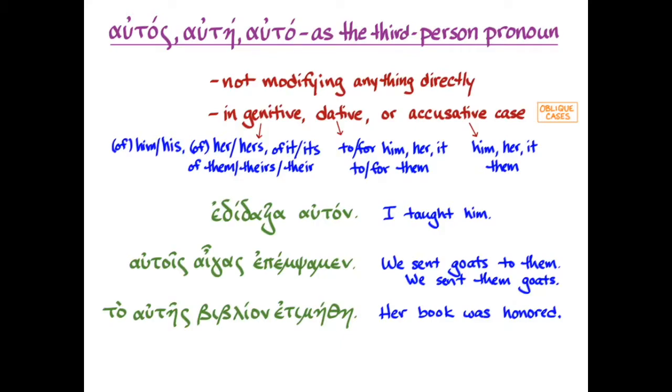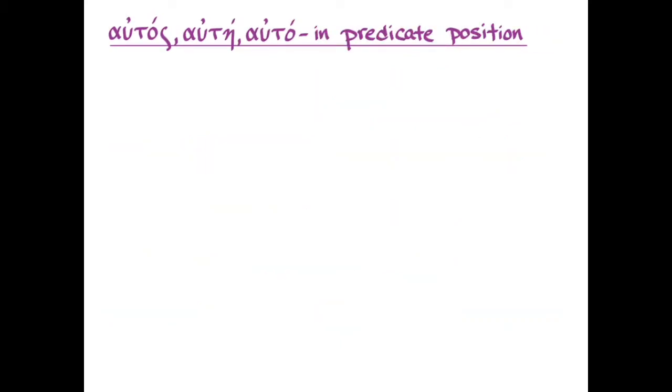Now, the last use of autas, autay, autah is something that it does when it's in predicate position, where it is an intensifier. That is, it adds the idea, I'm really talking about this thing, this particular thing. And so in English, we do that with the suffix self. So when we get it in the predicate position, in any case, it's going to have all sorts of familiar forms in English, herself, himself, itself, in the singular, depending on the gender of the noun that we're talking about, or themselves in the plural.